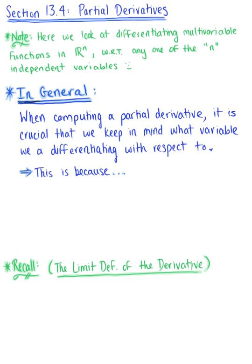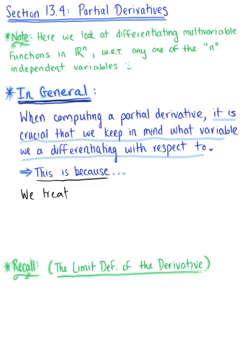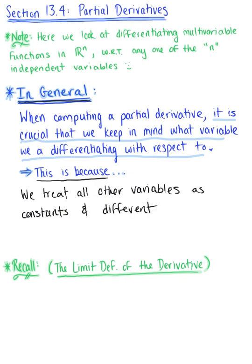Before we look at the definition, I want to make a general statement. When computing partial derivatives, it's crucial to keep in mind what variable we are differentiating with respect to. This is because we're going to treat all other variables in the function as if they were constants — real numbers — and then differentiate as if we had a single variable function.